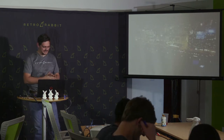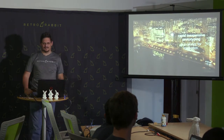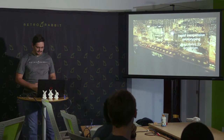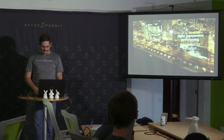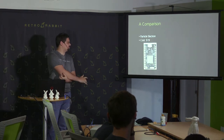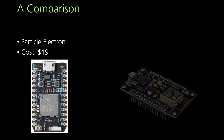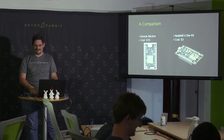I'll start with a statement: rapid, inexpensive prototyping is a catalyst for innovation. Today's topic is Internet of Things on the cheap, and what brought this about is this. This is the device we used last time — it's the Particle Electron, and it costs $20. This is the device we're using this time. It costs $3, and that includes shipping from China.